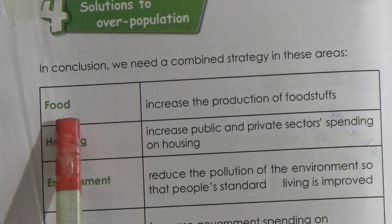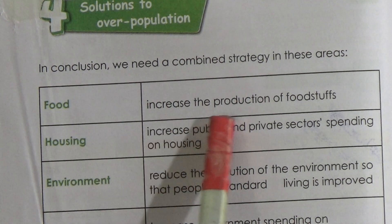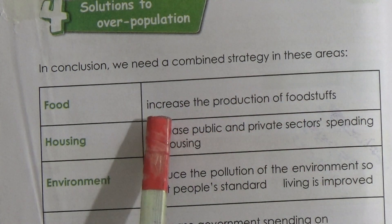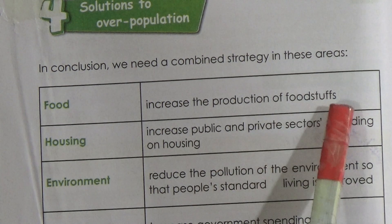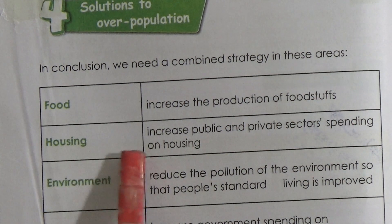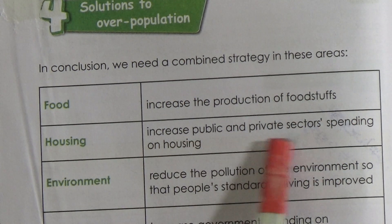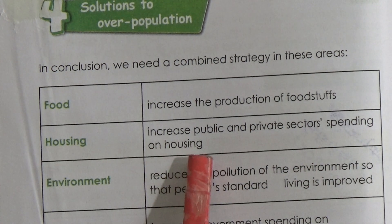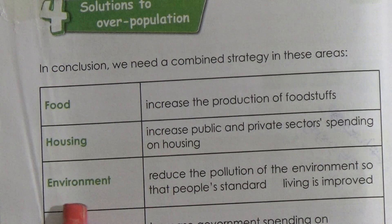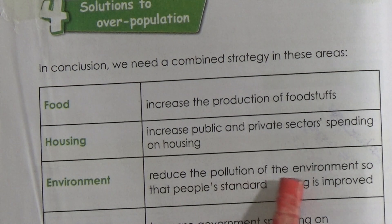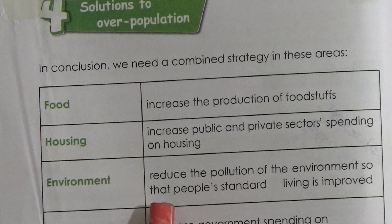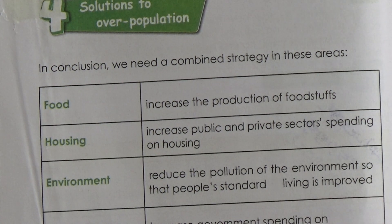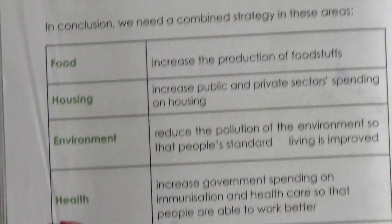First, in the food area: increase the production of foodstuffs. Housing: increase public and private sector spending on housing. Environment: reduce pollution of the environment so that people's standard of living is improved. Health: in the health sector,